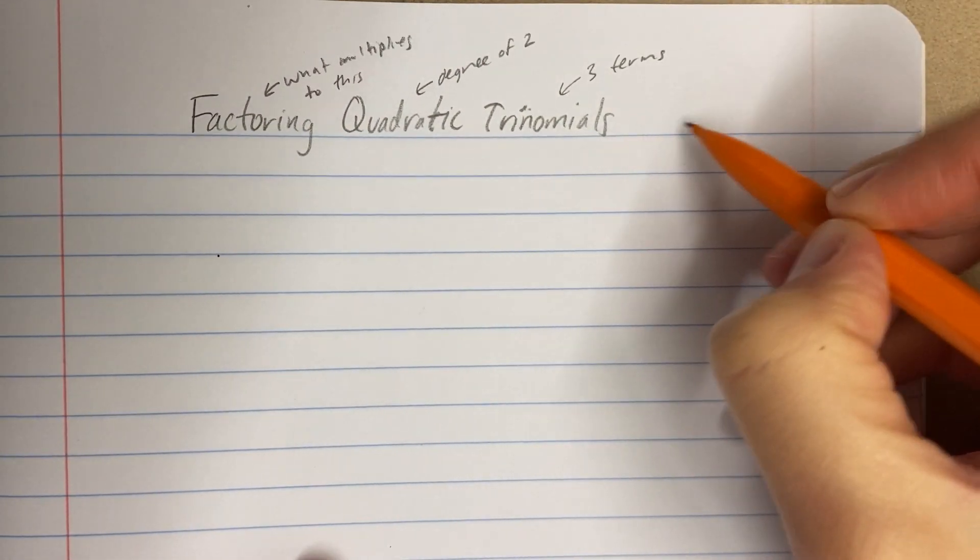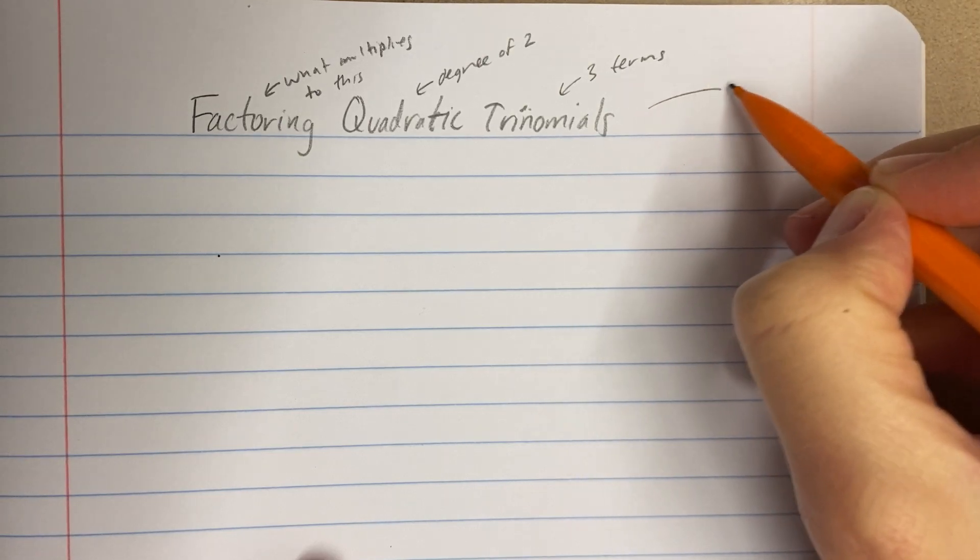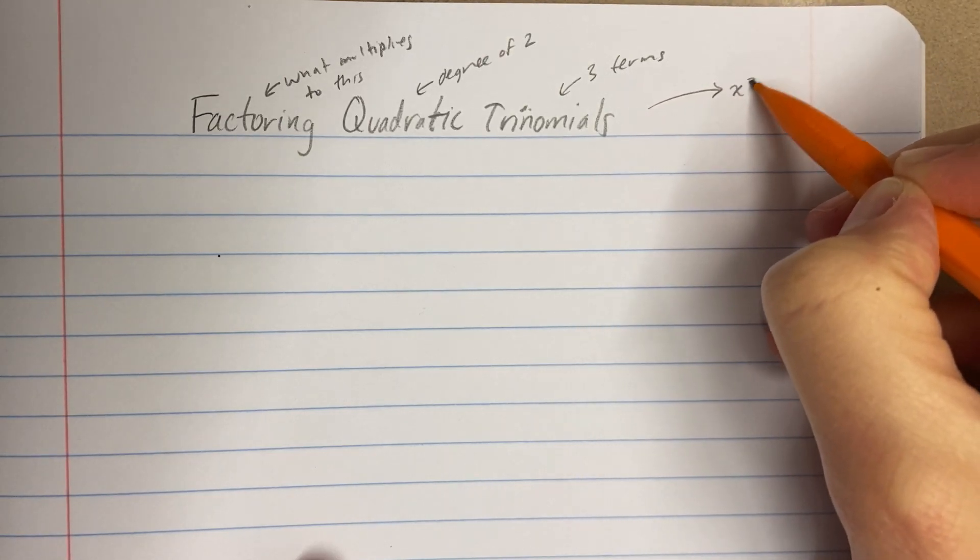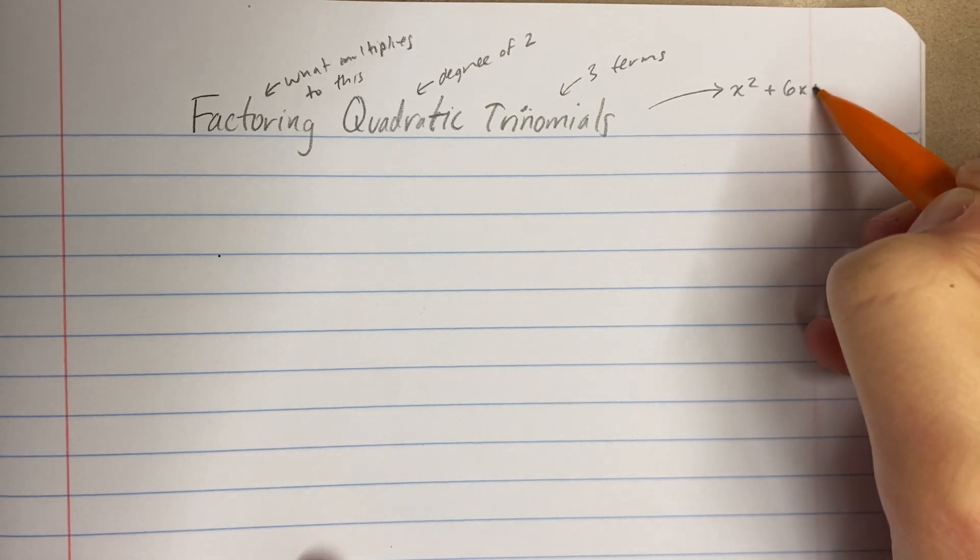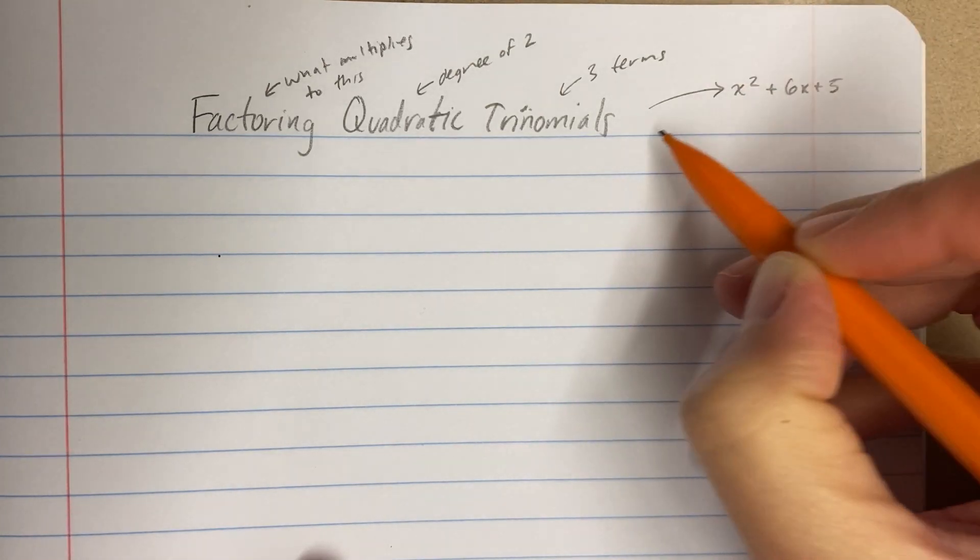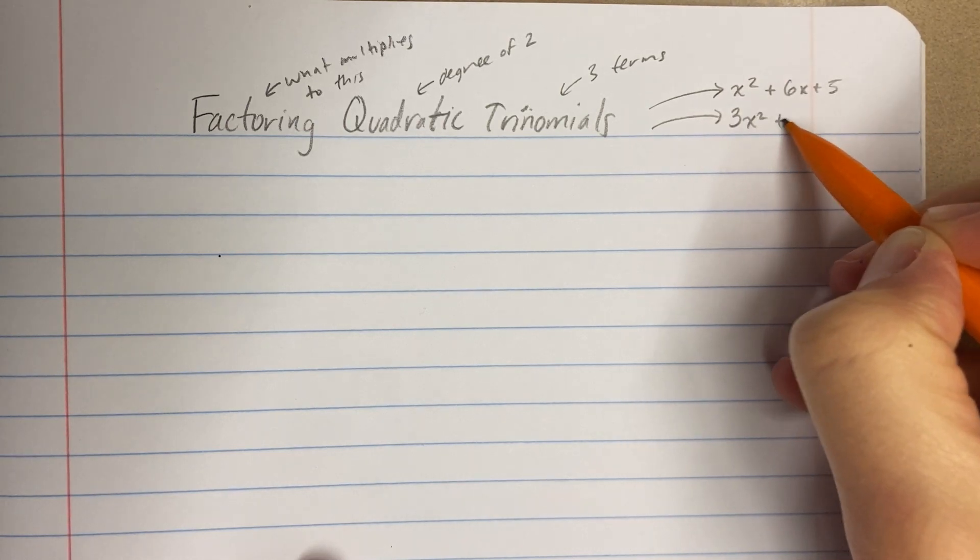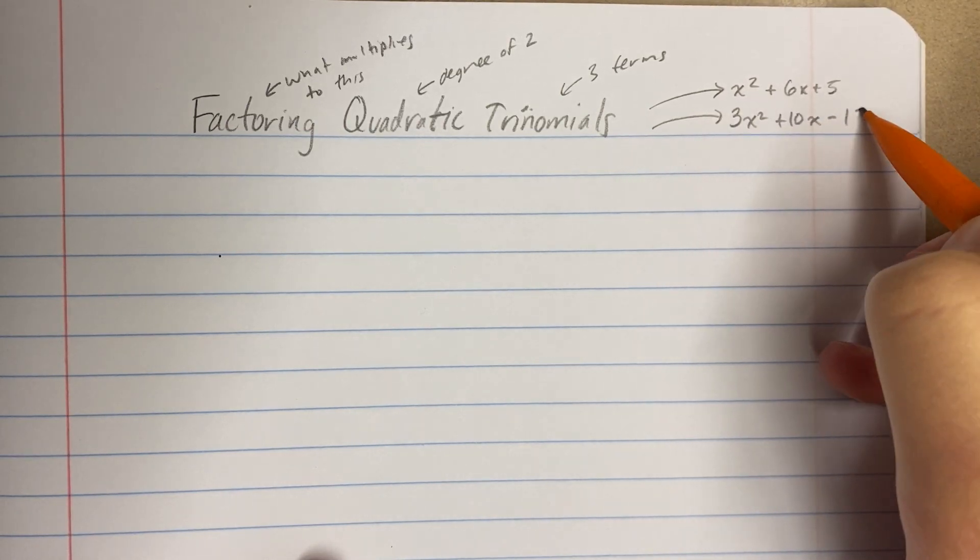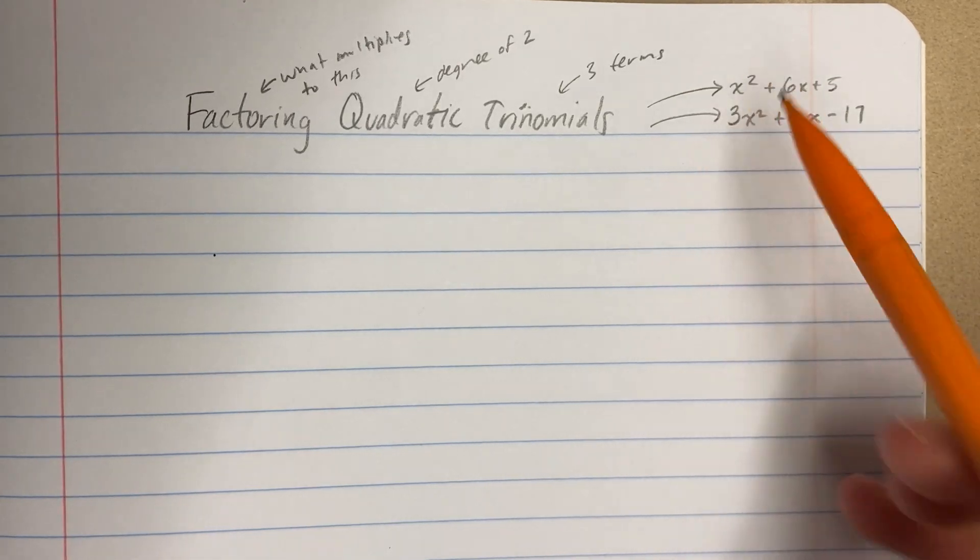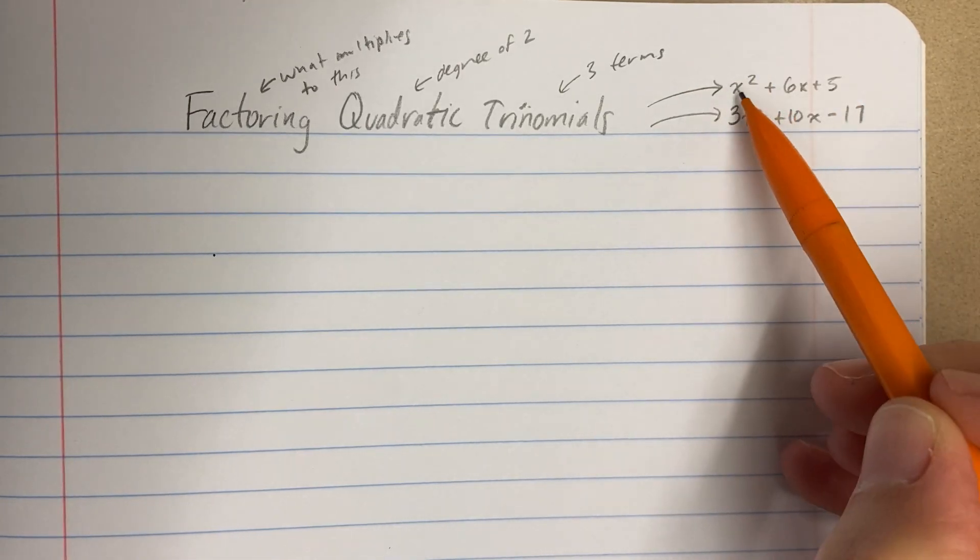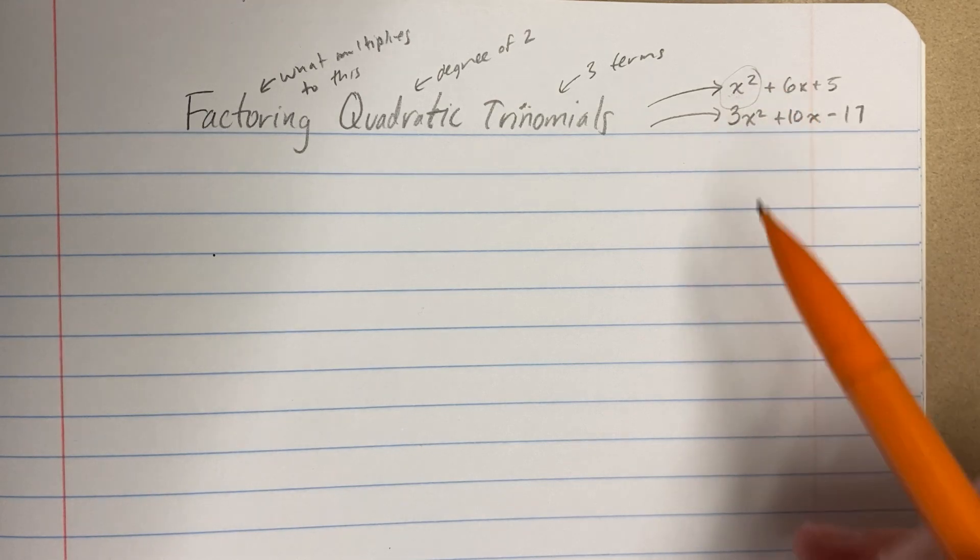So remember quadratic trinomials look something like this, right? Like x squared plus 6x plus 5. That's a quadratic trinomial. Now there's also quadratic trinomials that have like 3x squared plus 10x minus 17, something like that. We're going to see in this assignment, we're really going to be focusing on ones that just have that 1x squared in the beginning.